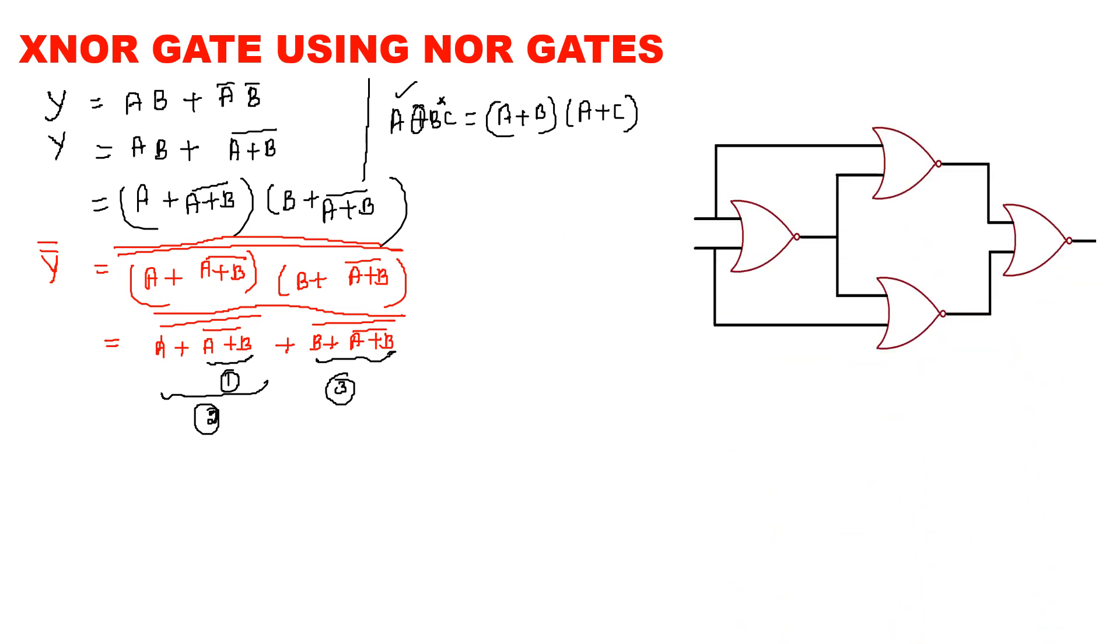So, this is the diagram and here put A, B. The first one, A plus B bar, the whole bar. Again, A for the second and here B the third.